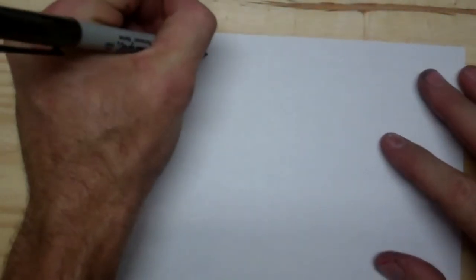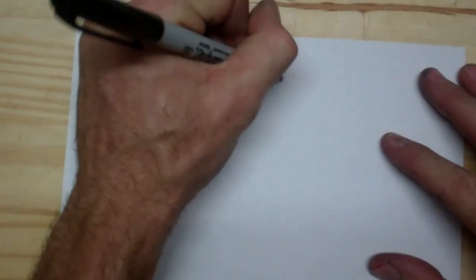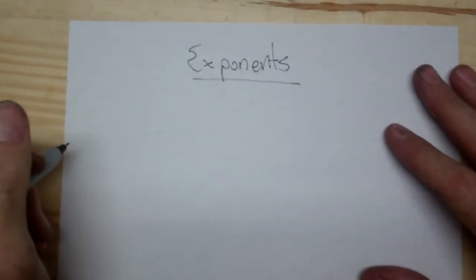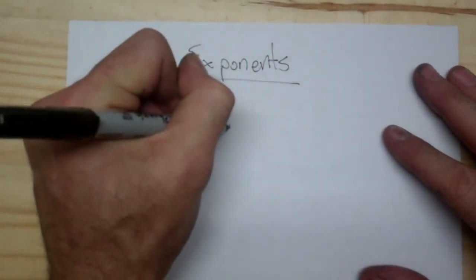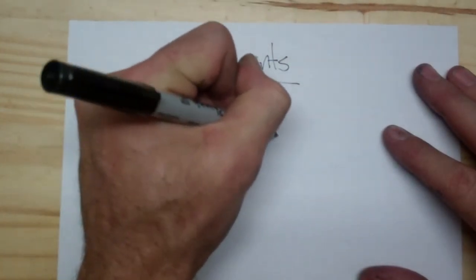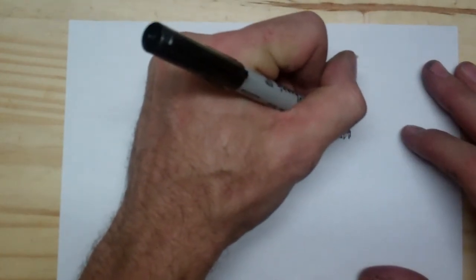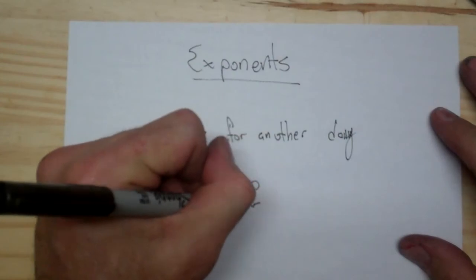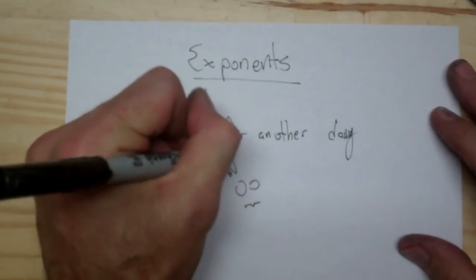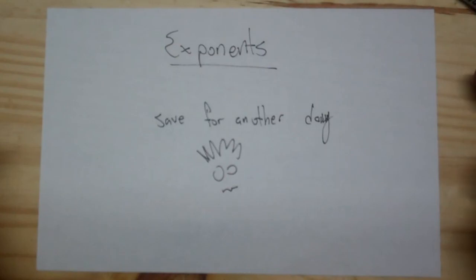Now, exponents is our other operation, but I need to save that for another video, because the notation with the fractional exponents gets a little bit hairy. So there it is — the orders of operation and the order in which we do them.